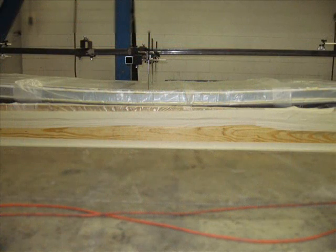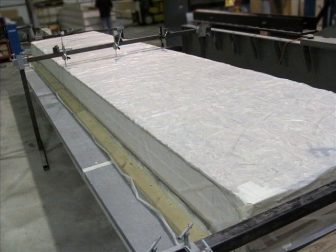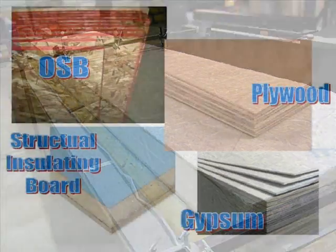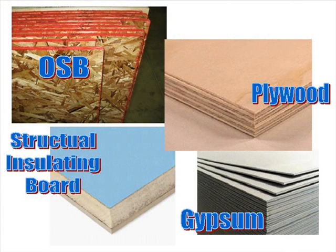Transverse load evaluation of sheathing materials on standard wood framing measures a panel's resistance to deformation and structural strength when exposed to a force perpendicular to the face of the panel. Typical panel materials tested by this method are plywood, gypsum, and structural insulating board.